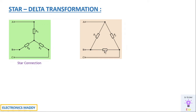What is delta configuration? If each resistance is connected between the other two resistances, then that is said to be delta. You can also remember it by the symbol delta — it exactly appears in that triangular form. So this is delta connection.